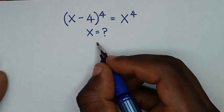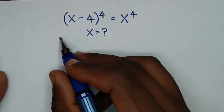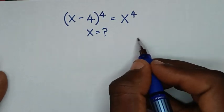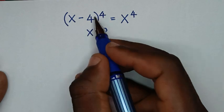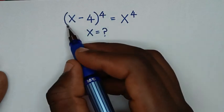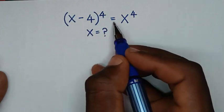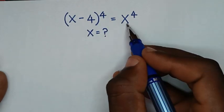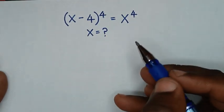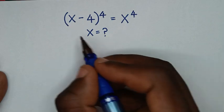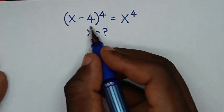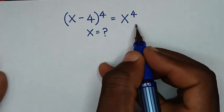Hello, you are welcome to solve this math problem of (x minus 4) bracket to the power 4 is equal to x to the power 4. We need to find the values of x from this equation.